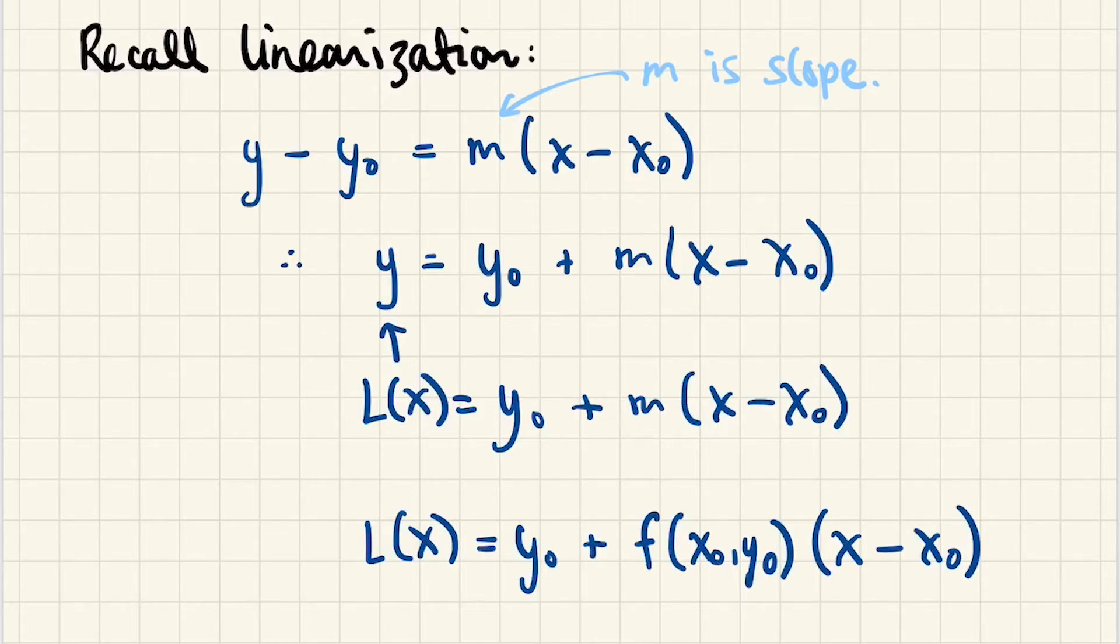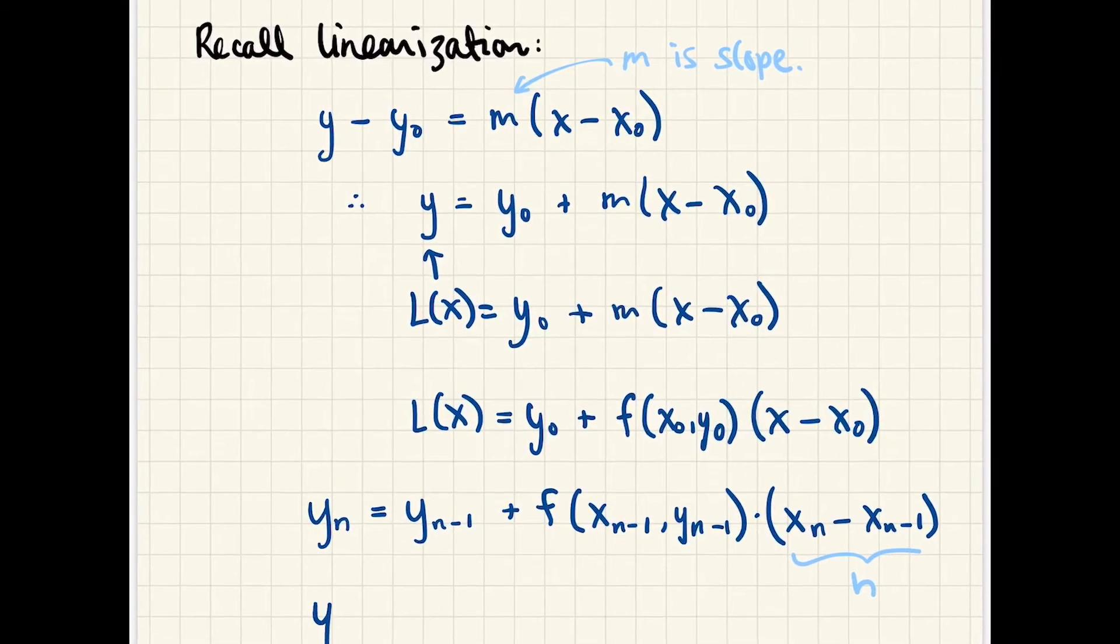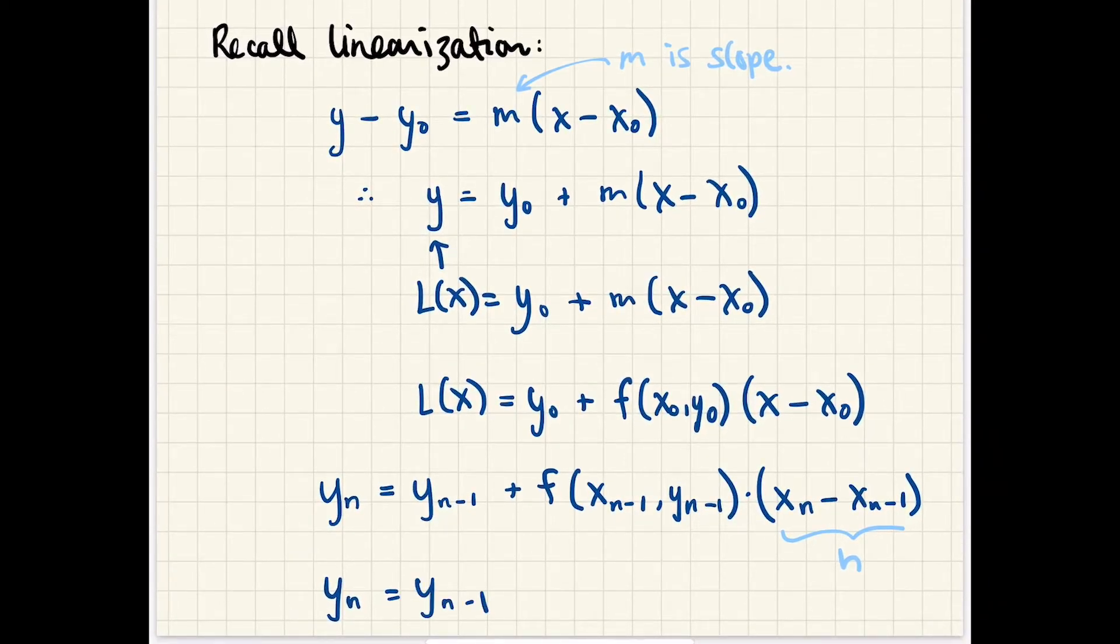Now of course, we're going to need a new linearization function as we step from x₀ to x₁, x₁ to x₂, x₂ to x₃, etc. And all we use the linearization function for is just to generate the next y number. So we go from y₁ to y₂ to y₃ and so on. So what we really can say is the following: the nth y is the previous y value plus the derivative at the previous xy value multiplied by the new x value minus the previous x value. But the new x value minus the previous x value is just h.